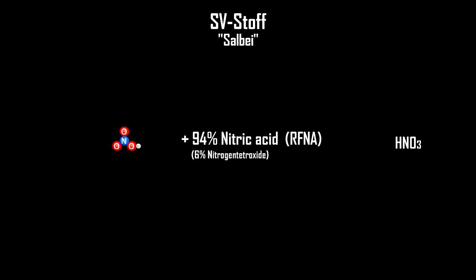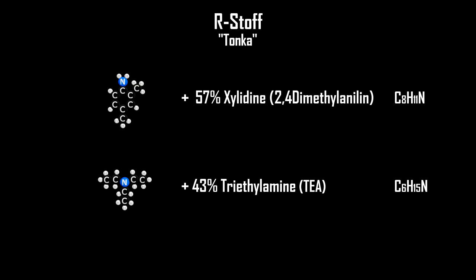In case of the X4, SV-Stoff was the oxidizer and R-Stoff the fuel. SV-Stoff, nicknamed Salbei, was a mixture from 94% nitric acid and 6% nitrogen tetroxide. As you can see, nitric acid carries a lot of oxygen. R-Stoff was a mixture made from 57% xylidine and 43% of triethyl amine. This mixture was also called Tonka. R-Stoff contains a lot of hydrocarbons.